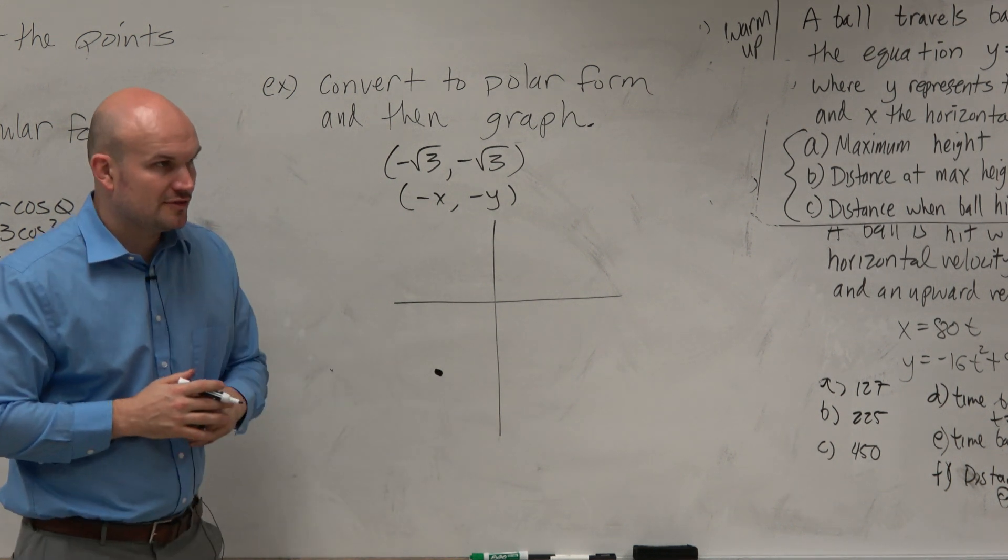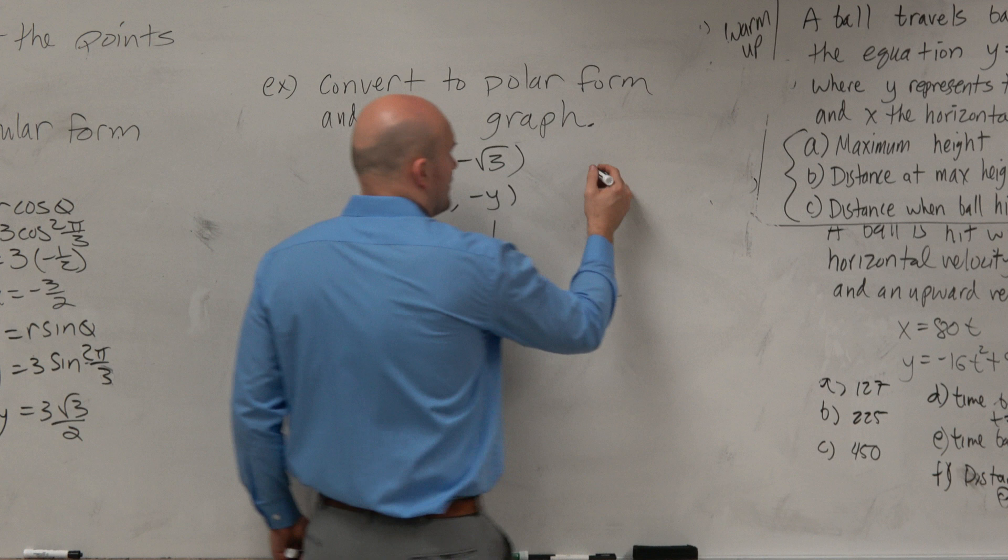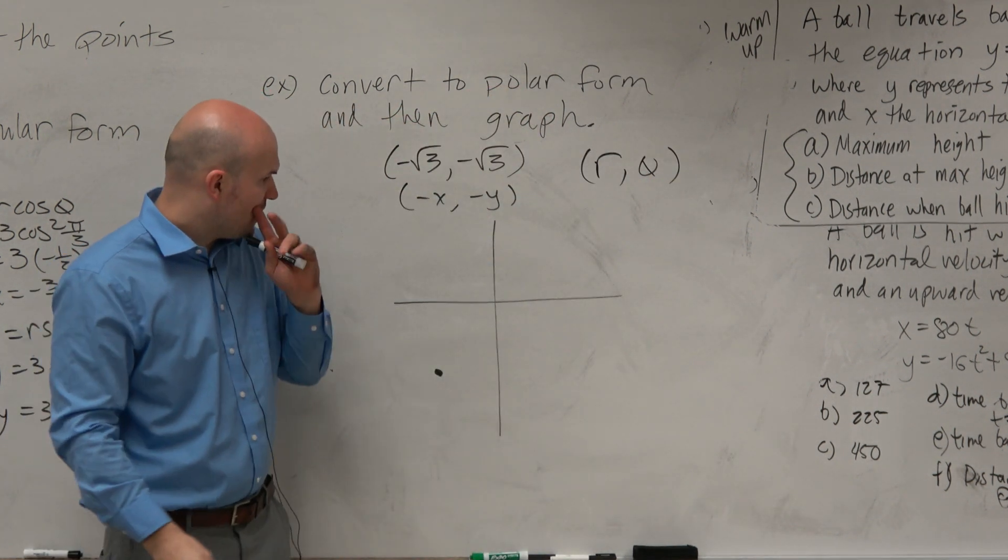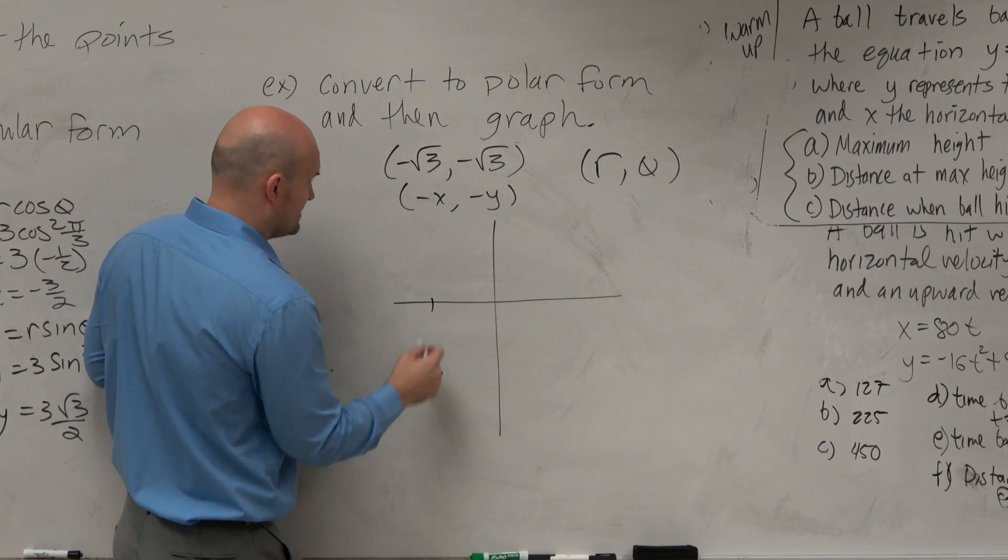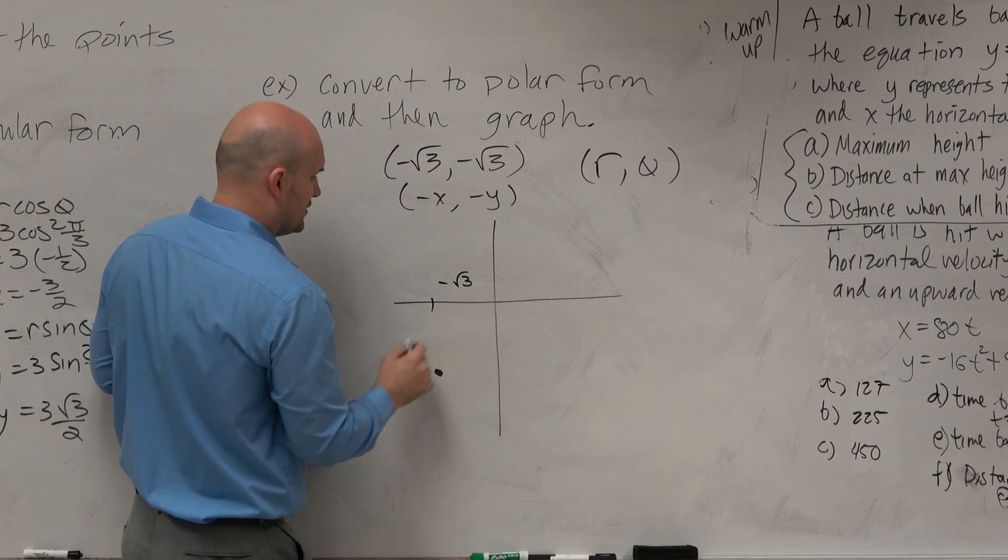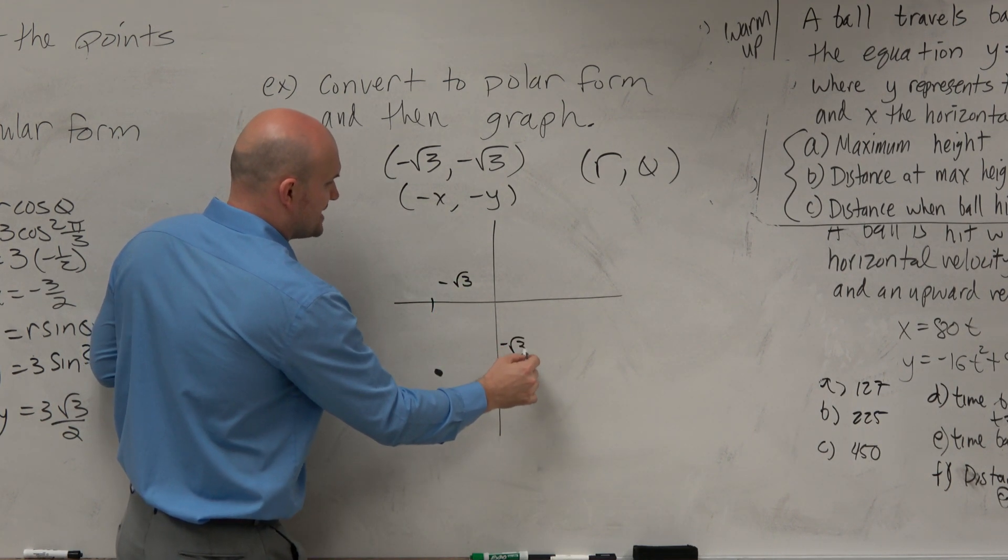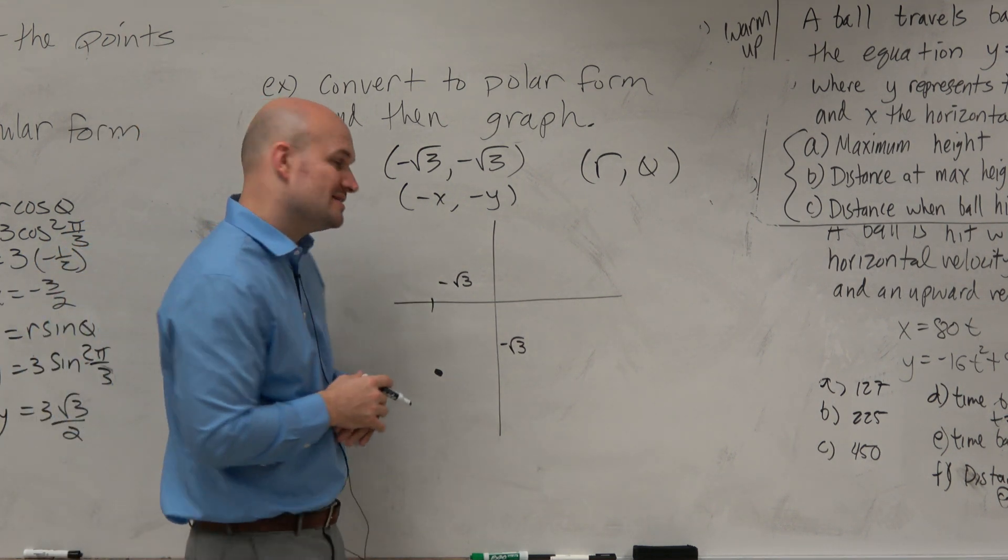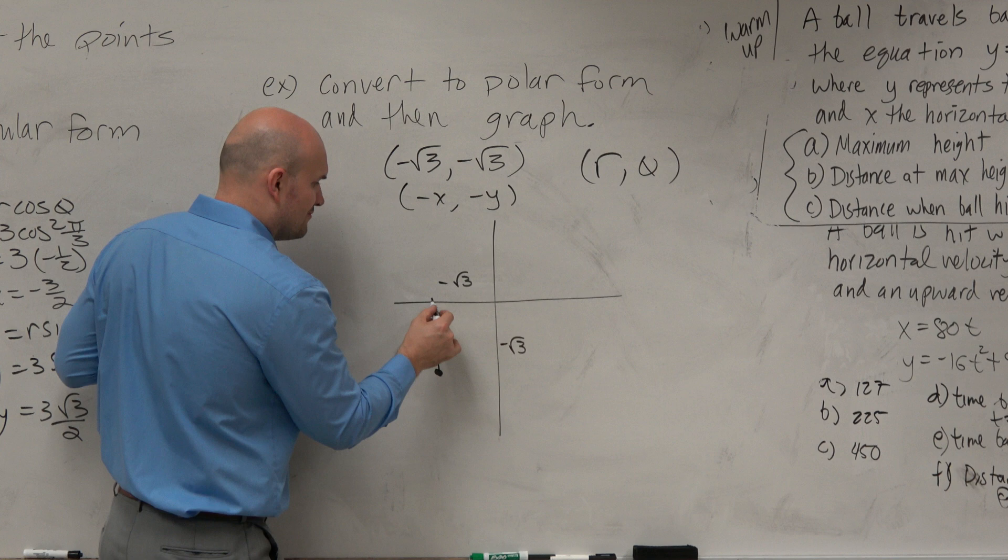If I had a point in the third quadrant and I needed to figure out the r and the theta, and I know that this point is negative square root of 3 over and negative square root of 3 down. Do I have enough information to figure that out? Yes, because all I need to do is create a right triangle.